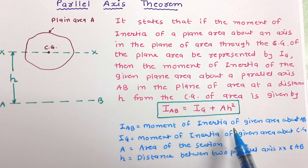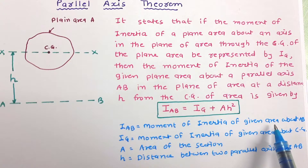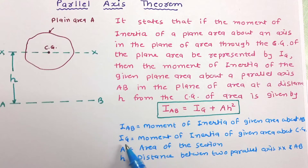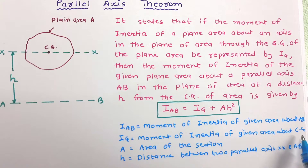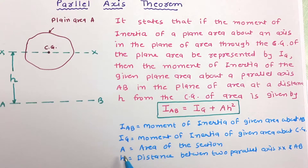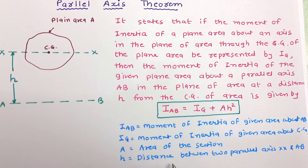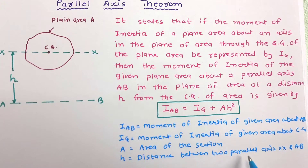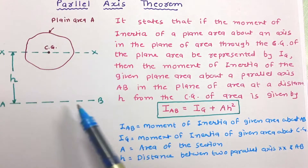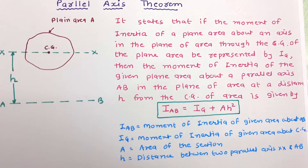Here, IAB is the moment of inertia of the given area about the AB axis; IG is the moment of inertia of the given area about the centroidal center of gravity CG; A is the area of this section; and H is the distance between the two parallel axes XX and AB.